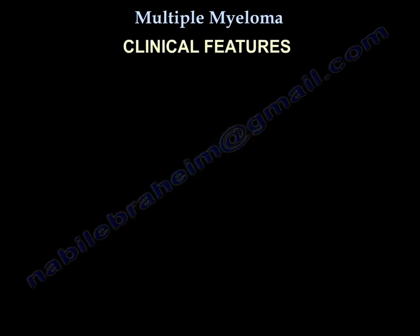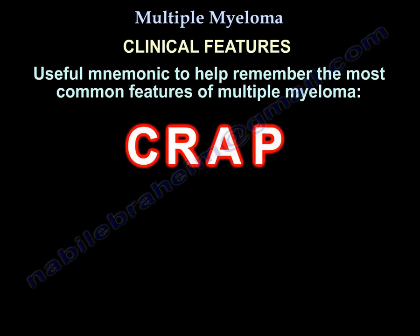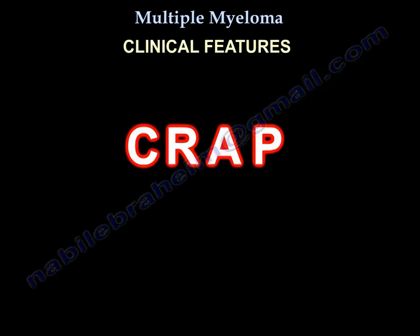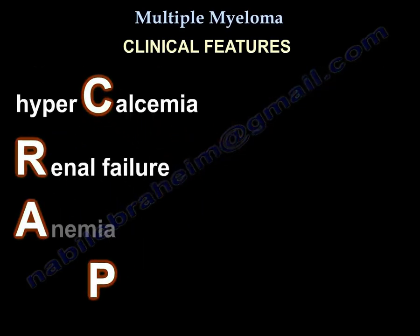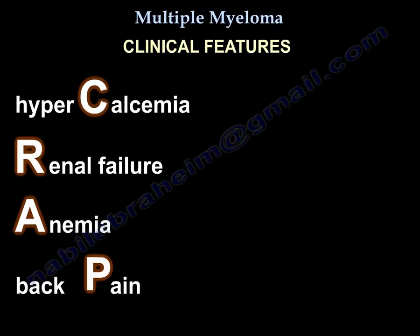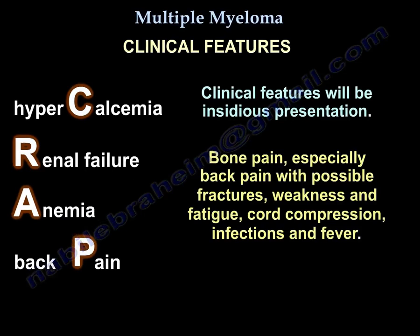For clinical features, the easiest way is to use the mnemonic CRAB — you feel like crap. The C is hypercalcemia, the R is renal failure, the A is anemia, and the B is back pain. Let's talk about it in more detail.